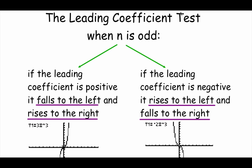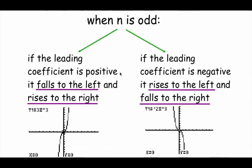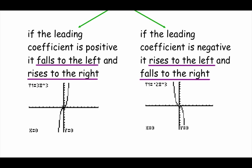Now let's talk about the leading coefficient test, which helps us describe end behavior — what's happening on the left-hand side and the right-hand side of our graph. If n is an odd power and the leading coefficient is positive, the graph falls as we move to the left and rises as we move to the right. If the leading coefficient is negative — that's like an x-axis reflection — the graph rises to the left and falls to the right.